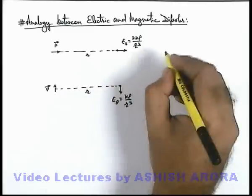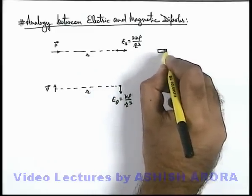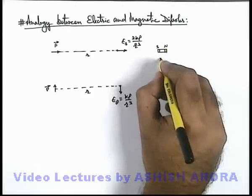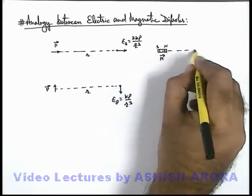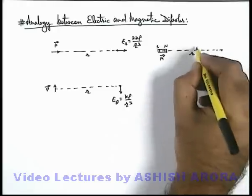Similar to this, if we consider a magnetic dipole which is a very small magnet with the poles distance N and S, and it is having its magnetic dipole moment m vector, and from this magnetic dipole on the axial line at a distance r.